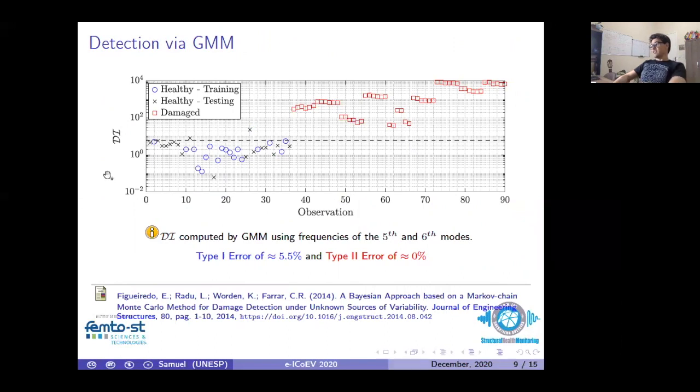When using half of the data set for training and the other for testing, this detection algorithm can successfully detect the damage with no false negative damage and a low number of false positive damages, around 5%. Here we can see the type 1 error and the type 2 error, so you can detect adequately the existence in the binary classification using the Gaussian Mixture Model using the features corresponding to the chosen frequencies in the 15th and 16th mode.